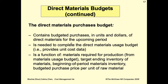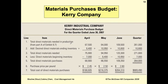The direct materials purchase budget contains budgeted purchases in units and dollars of direct materials for the upcoming period. It is determined based on materials required for production from the materials usage budget, beginning and ending materials inventory, and the budgeted purchase price per unit of raw material. You can see the example for Carrie Industrial Company from April to June in your ebook.